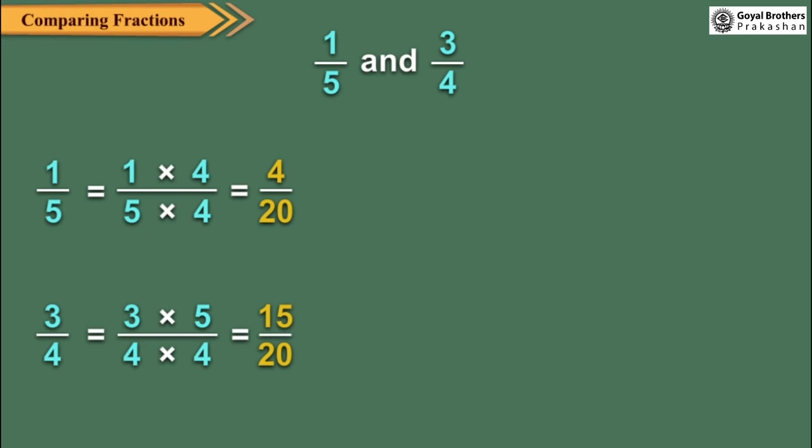Now, compare 4 upon 20 and 15 upon 20. Here, 4 is less than 15. So, 4 upon 20 is less than 15 upon 20. Hence, 1 upon 5 is less than 3 upon 4.